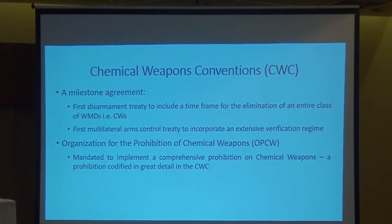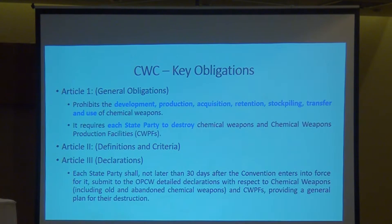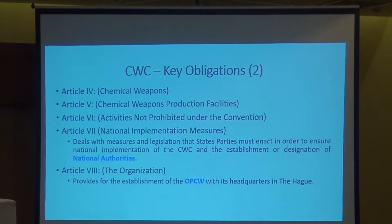The four pillars of the CWC are: first, disarmament, stipulated in Articles 1, 3, 4 and 5; second, non-proliferation, enshrined in Article 6; third, assistance and protection under Article 10; and fourth, international cooperation under Article 11 of the convention.